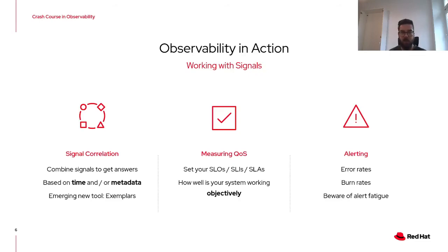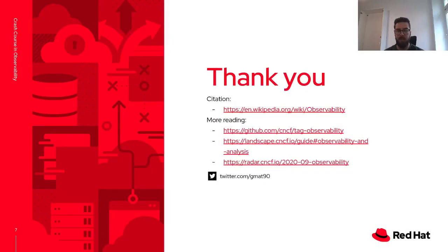But be wary of overdoing it — too many alerts mean more noise, so focus only on what's important. Hopefully now we have a basic understanding of what observability is, how we can use it to make hypotheses about the state of our systems, and how signals as outputs play a crucial role in making this possible. Thank you for your attention and be sure to check out the links to more resources on this slide.